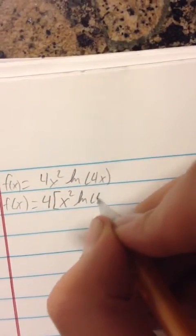Alright, what we're going to do first is we're going to factor out a 4. So you get 4 times x squared times the natural log of 4x.